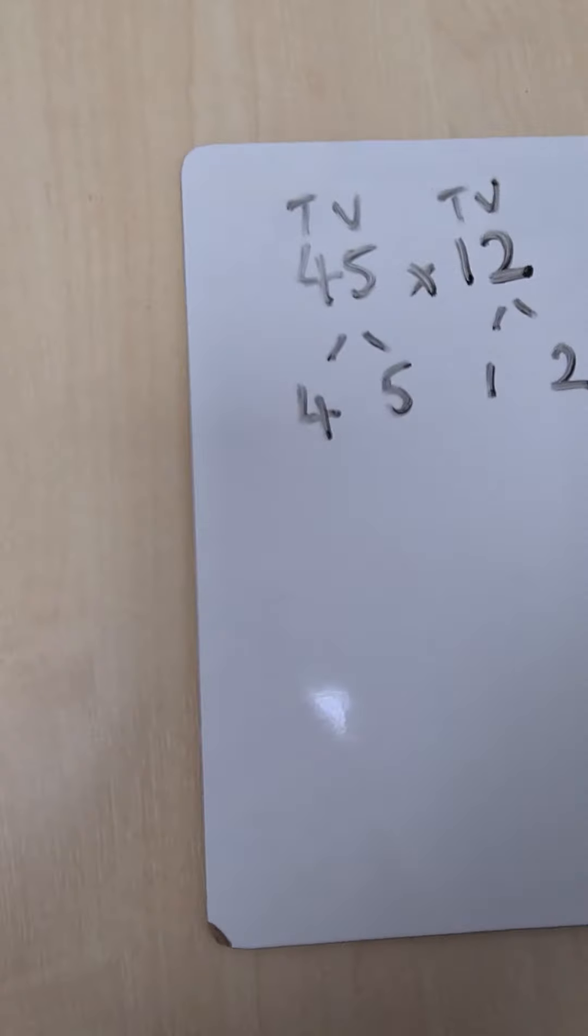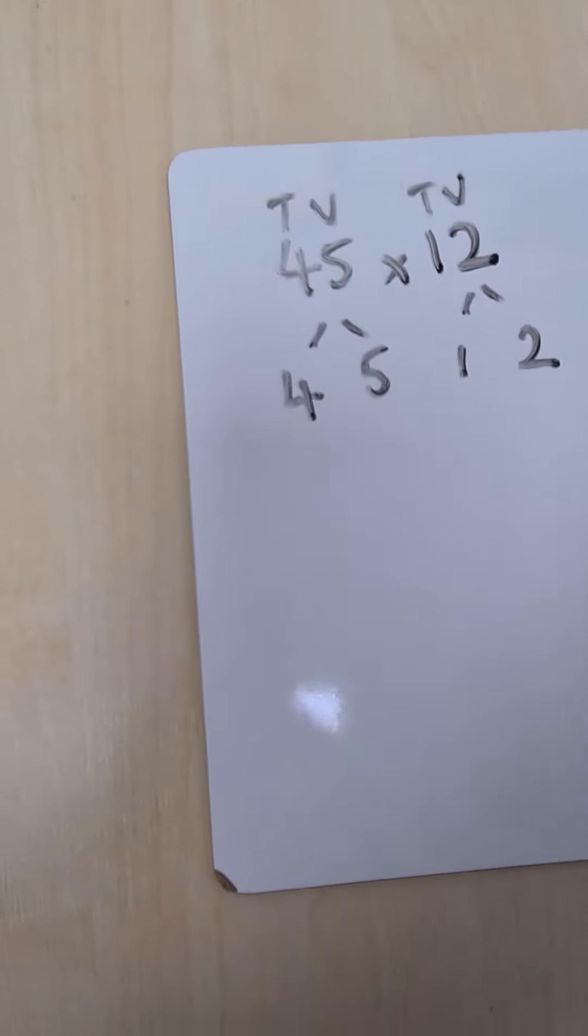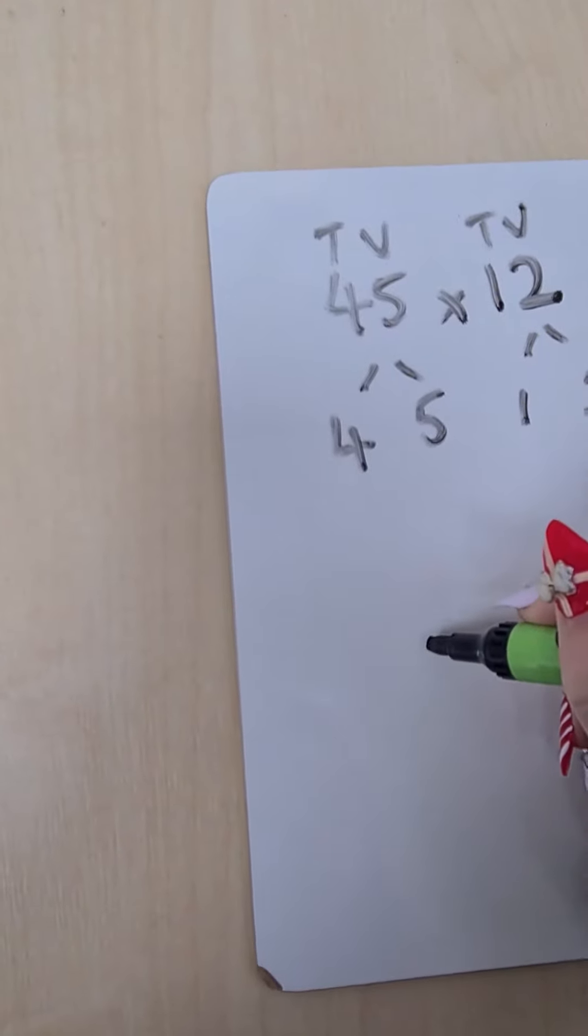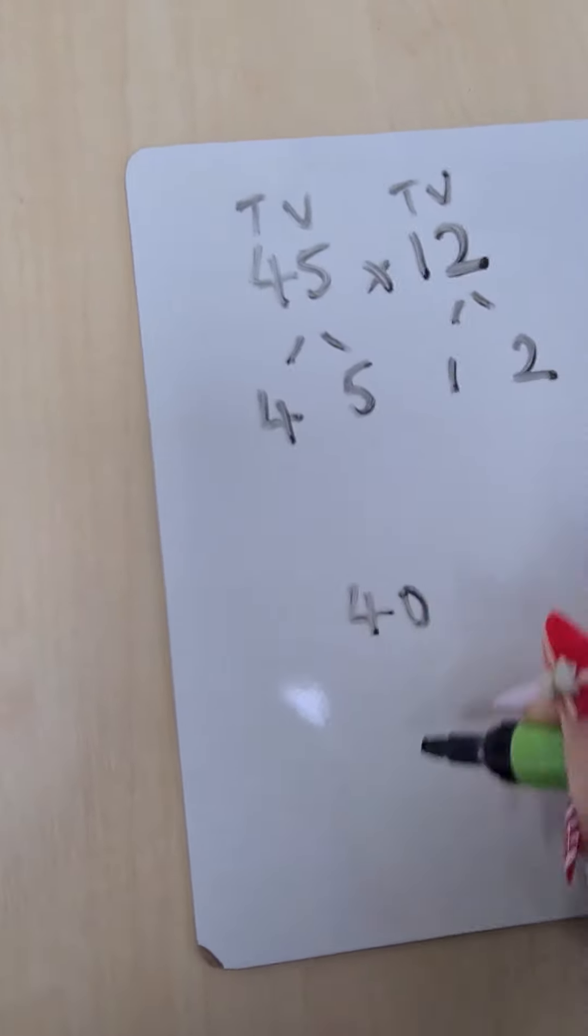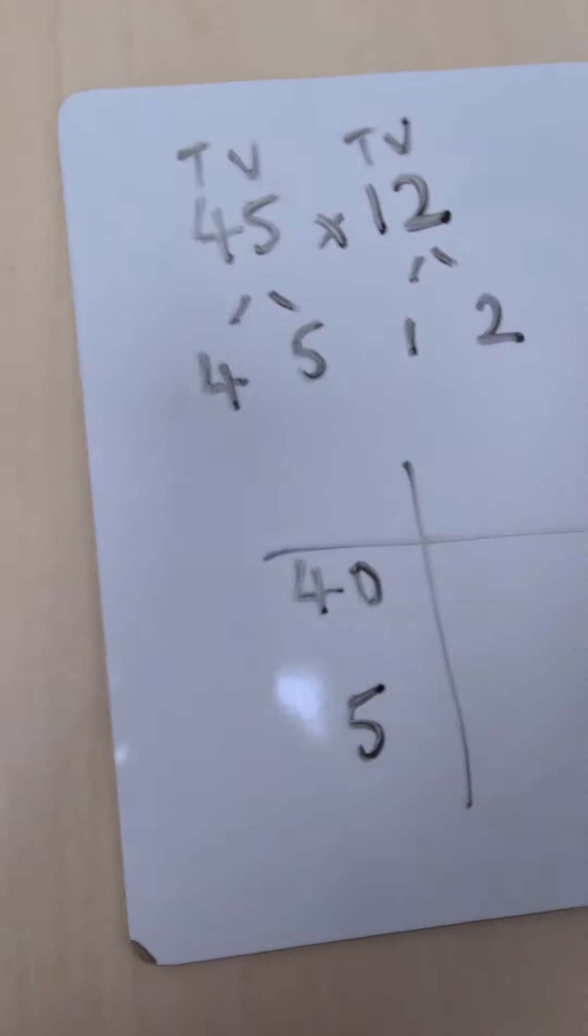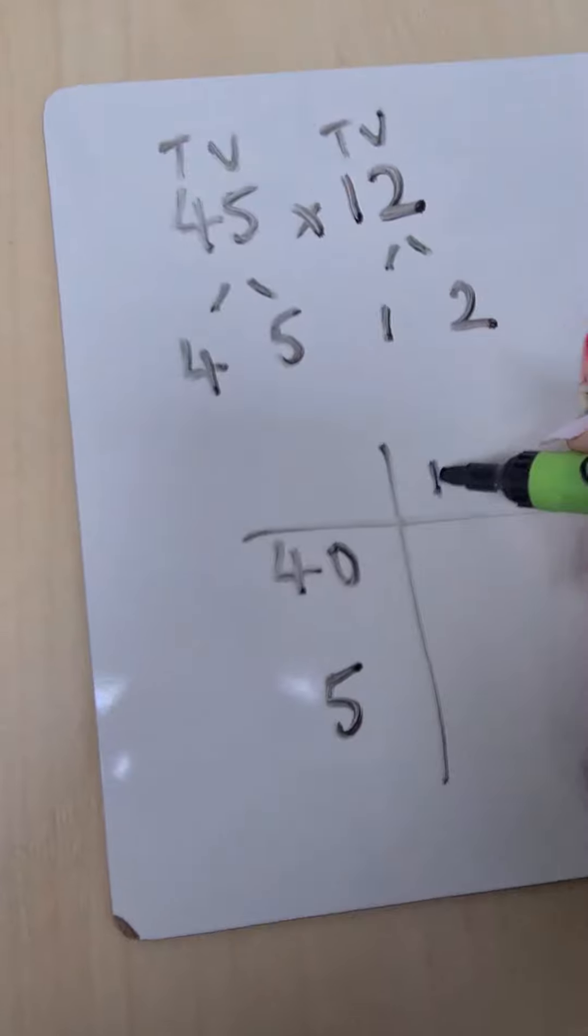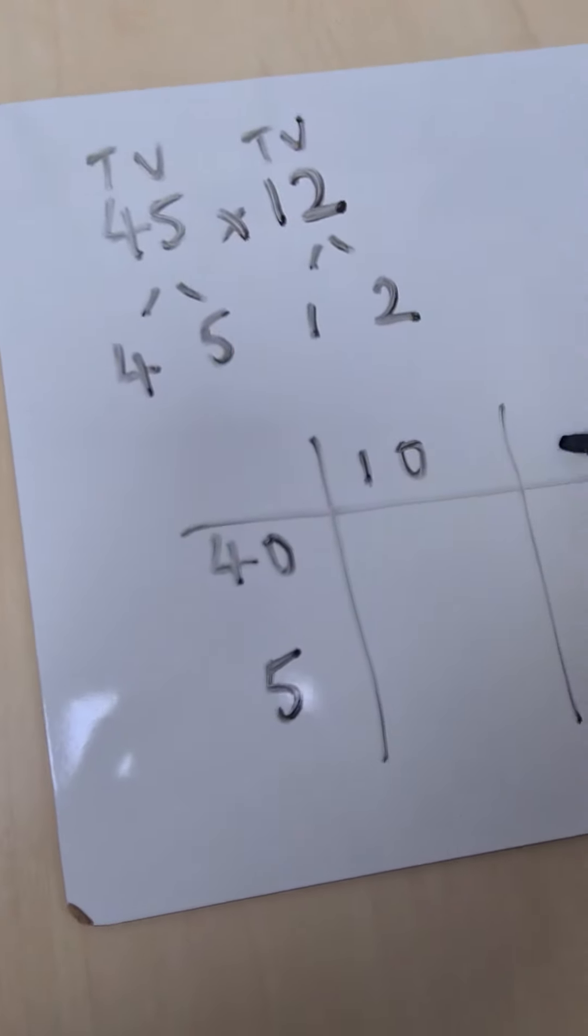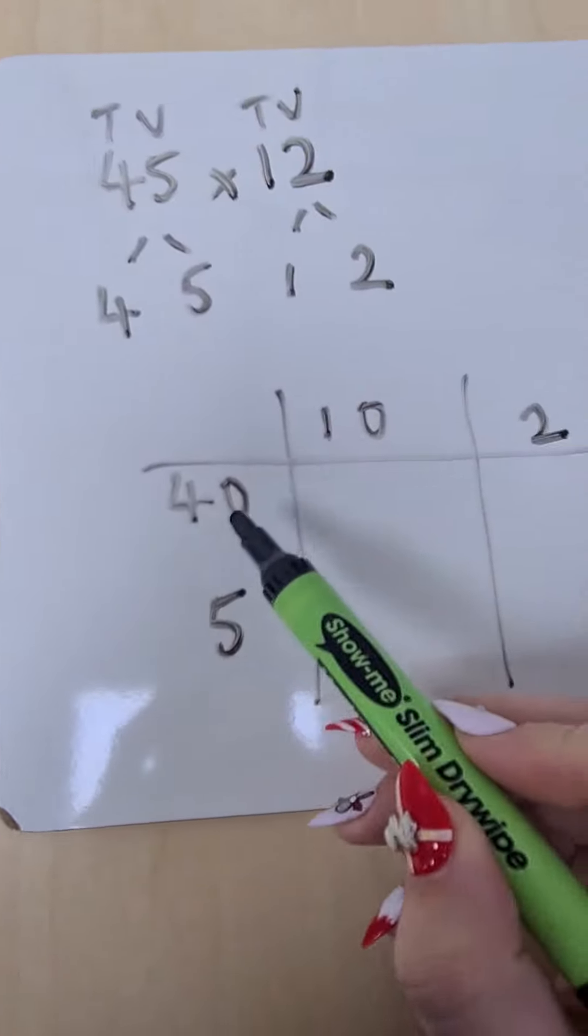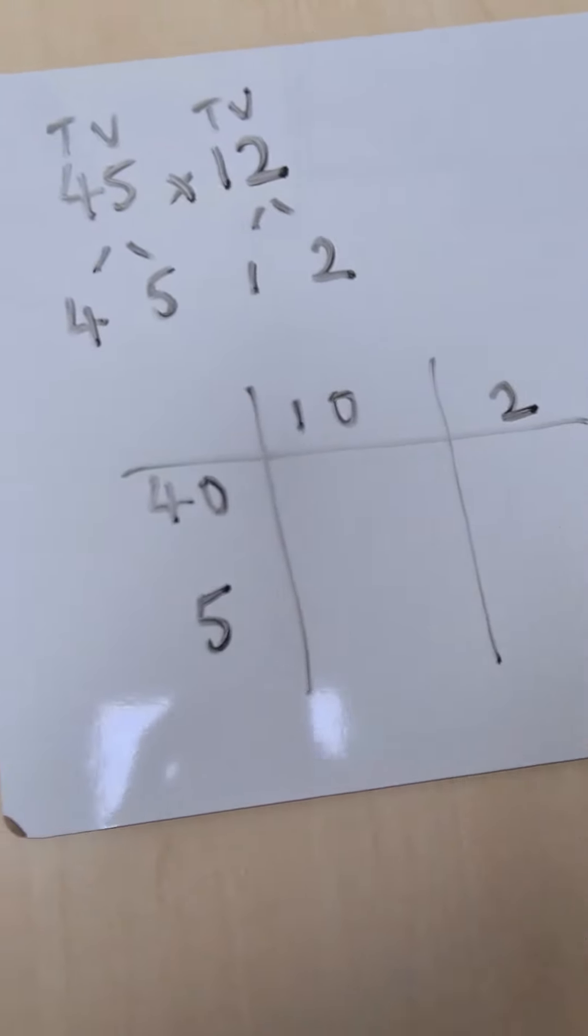I need to start by building my expanded method which requires a grid. I will need to take my tens and my units of my first number. I will also take my tens and my units of my second number. I will then complete four multiplications.